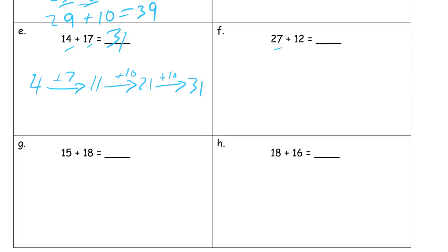And here we have 7 and 2. That's going to add up to 9. That's less than 10. So this is going to be pretty easy to make this a 10, 2. 27 plus 2, 29. Plus 10, 39.